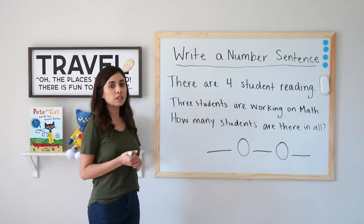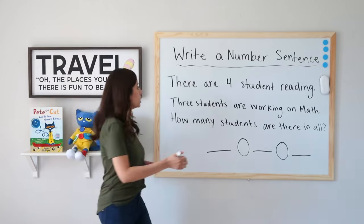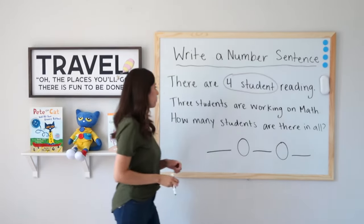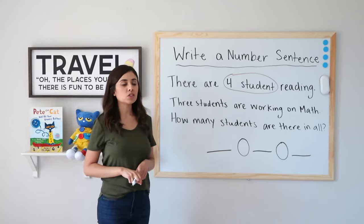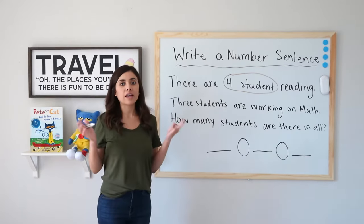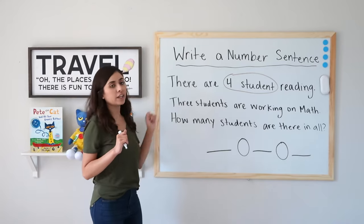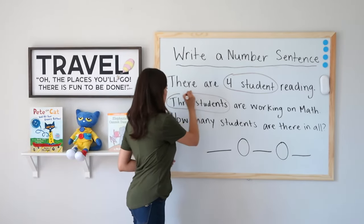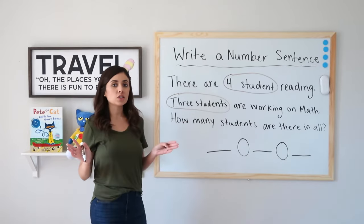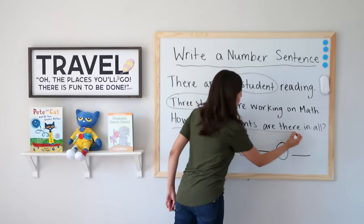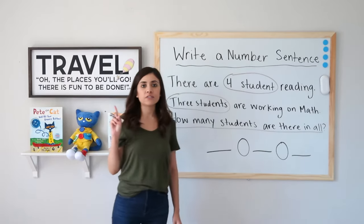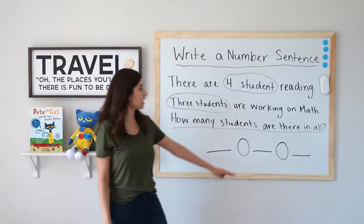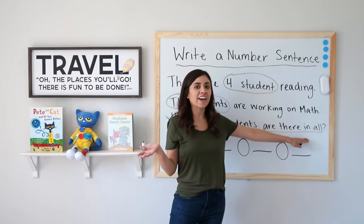So how many students are reading? Four. So I'm going to circle four students. Now I want to know how many students are working on math — three. So I will circle three students. I want to know how many students are there in all, and we have constantly said that "in all" means to add.